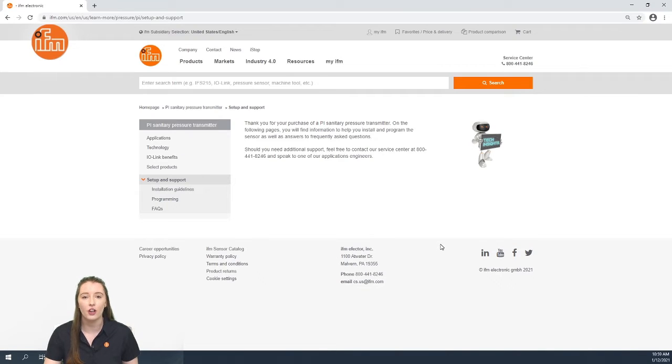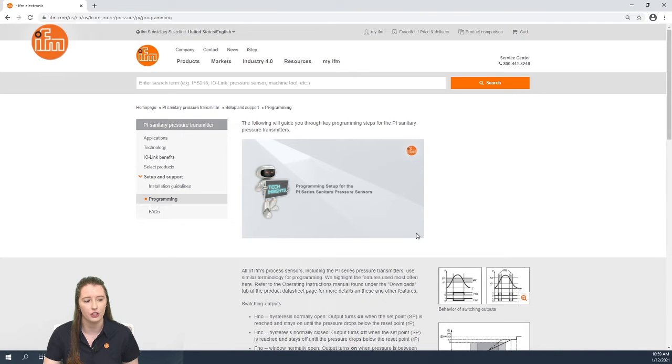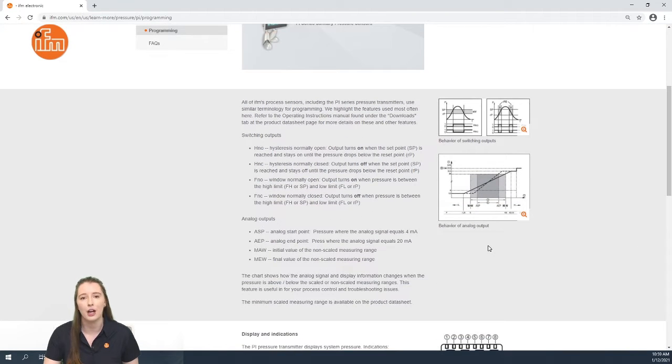So here you have the learn more section on our website for our PI series pressure sensors. In this video I am going over the programming of these sensors. In this section we go over some commonly used terms in our menu structure such as HNO, HNC, FNO, and FNC which are some different types of switching outputs.